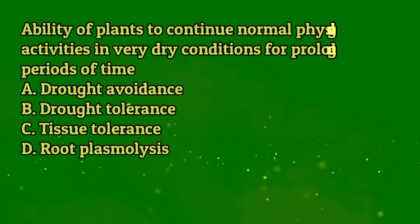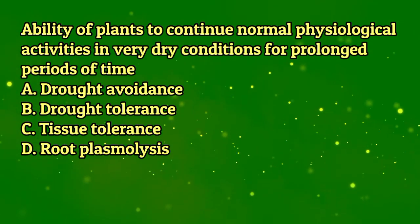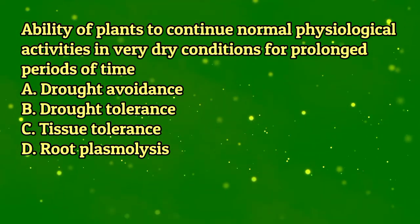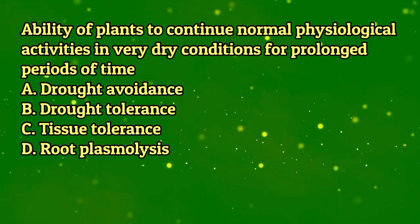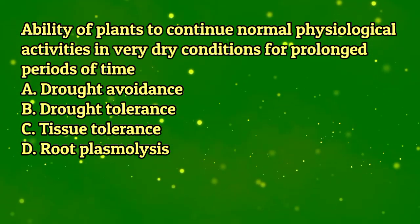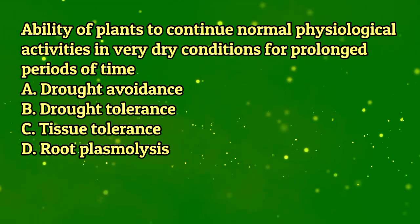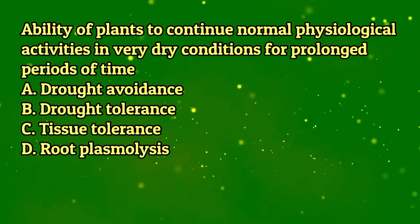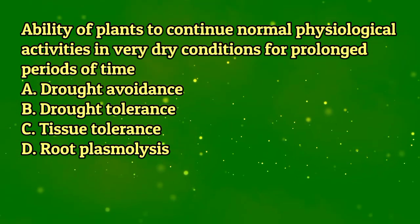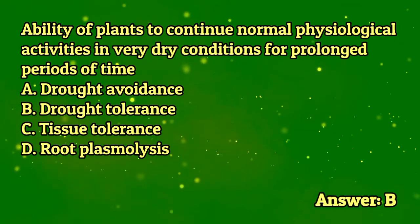Ability of plants to continue normal physiological activities in very dry conditions for prolonged periods of time. A. Drought avoidance. B. Drought tolerance. C. Tissue tolerance. D. Root plasmolysis. The answer is letter B.